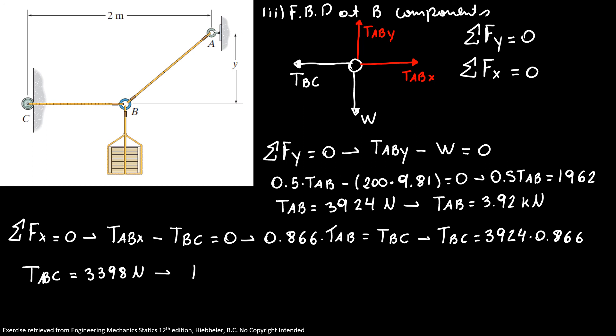If you want to convert, you can say that your tension BC equals 3.34 kilonewtons. So here I have both of my tensions AB and BC.